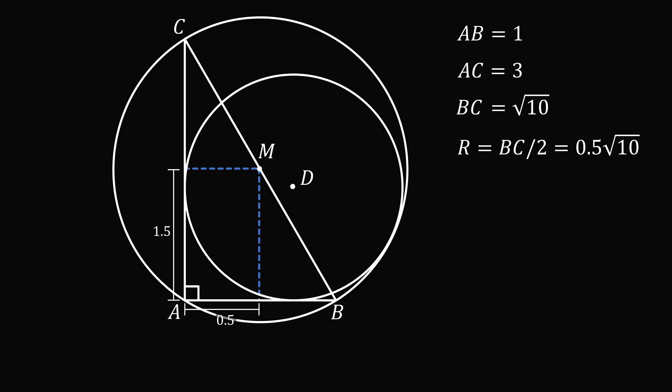Now this circle and the circumcircle of the triangle are tangent at a point T. So by the principle, MDT will be a straight line segment. Let's suppose the radius of this smaller circle, DT, is equal to R.